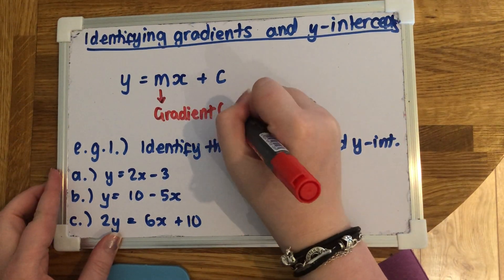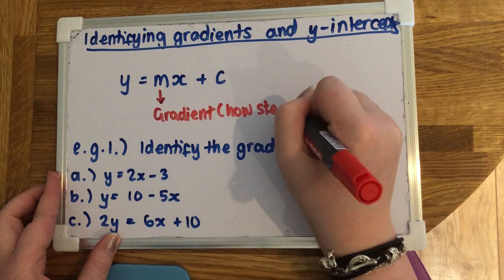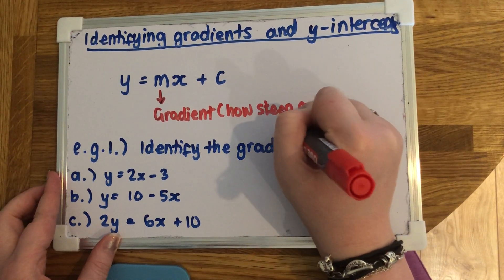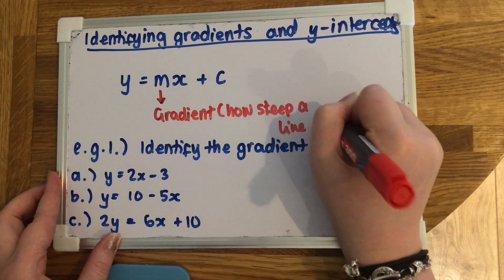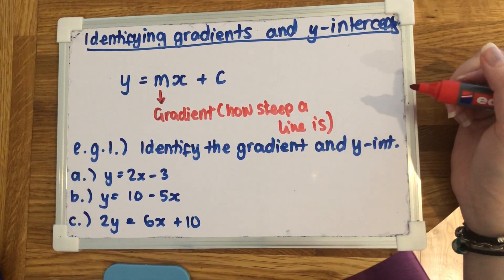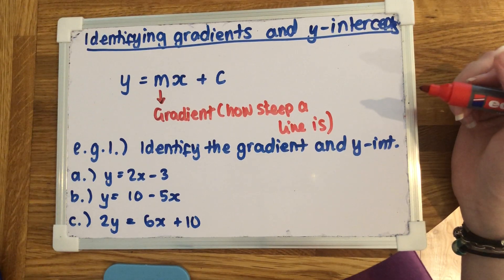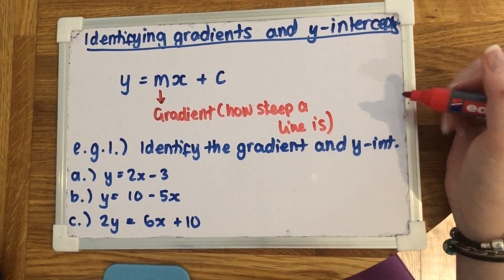The gradient is just how steep a line is. So if you've got a line that has a gradient of 2, that's not going to be as steep as a line that has a gradient of 10. So the bigger the number, the steeper that the line will be.